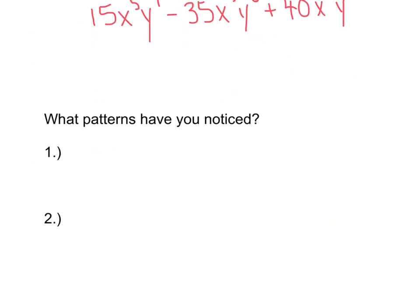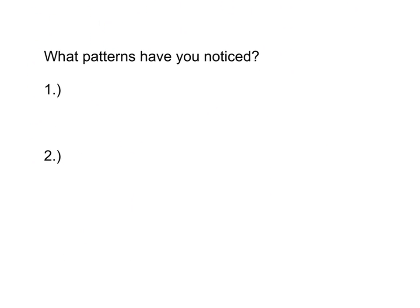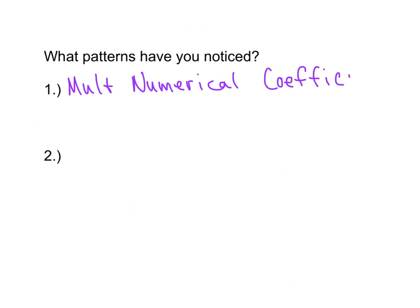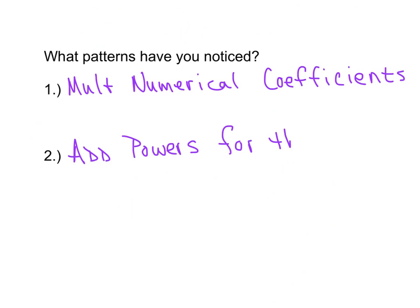Let's summarize what we did there. We're going to multiply the numerical coefficients — that's the big number in front of the variable. Then we're going to add powers for the like bases: identify the x's and add those exponents together, then identify the y's and add those exponents together, and the same for any other variables.